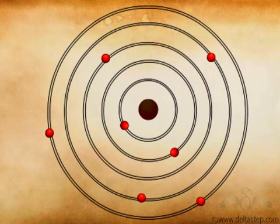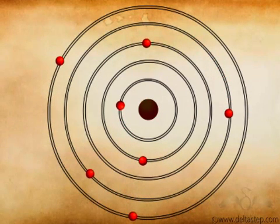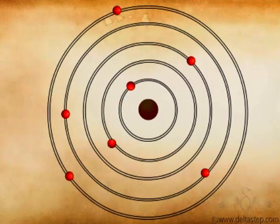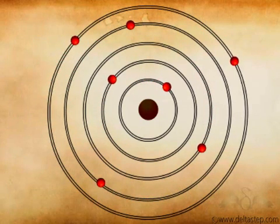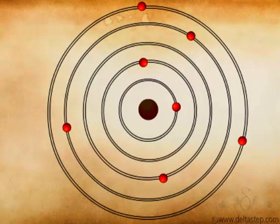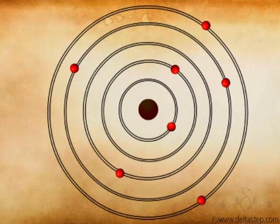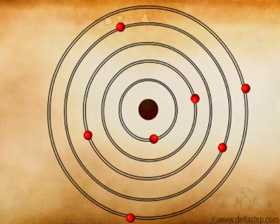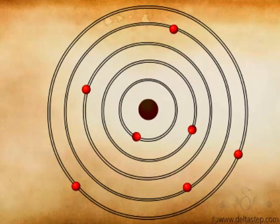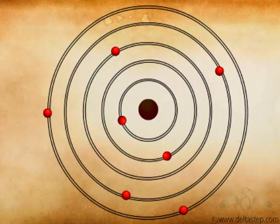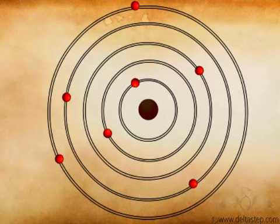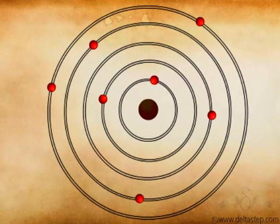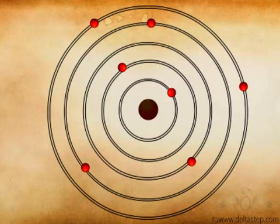So according to Niels Bohr's model, the electrons revolve around the nucleus in definite orbits. They revolve in these definite orbits in which they do not radiate energy. So only particular orbits are allowed in which the electrons can revolve without losing energy.